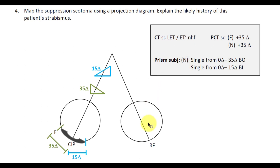First, we draw a free space projection diagram. We know the left eye is esotropic, so the CIP is falling on nasal retina, and the distance between the CIP and the fovea is 35 diopters from the PCT. We use the near PCT, which is also 35, because the prism subjective was performed at near.